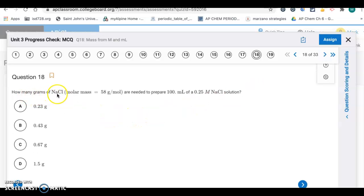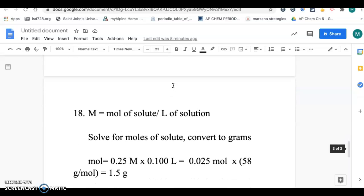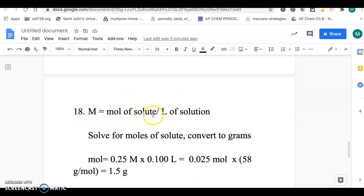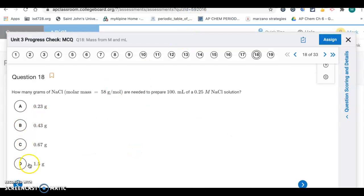Question 18. How many grams of NaCl are needed to prepare 100 milliliters of a 0.25 molar NaCl solution? Going back to my work page. Here's the equation for molarity, moles of solute divided by liters of solution. We want to solve for moles then convert to grams. We'll rearrange the equation to solve for moles: molarity times liters. That gets your number of moles, then multiply by the molar mass, 58, to get 1.5 grams. That one's letter D.